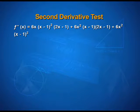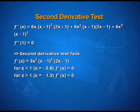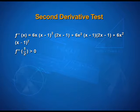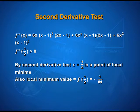Considering the second-order derivative at x equal to 1: the derivative is again 0 and therefore the second derivative test fails. Taking values less than and greater than 1, and because of the repeated factors in the function, we end up with one more point of inflection. The third critical point was x equal to 1/2. Here, f''(1/2) is greater than 0, which means by the second derivative test that x equal to 1/2 is a point of local minima. The local minimum value is the function's value at x equal to 1/2, which gives negative 1/64.